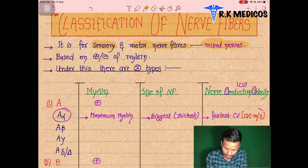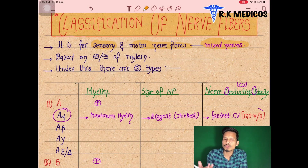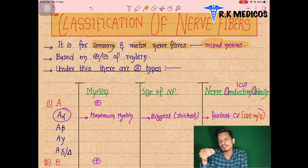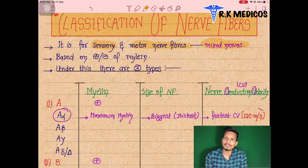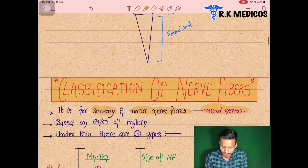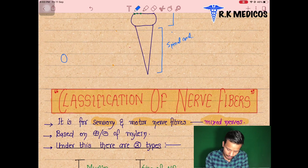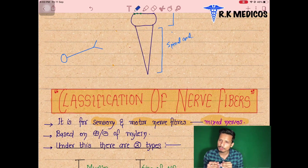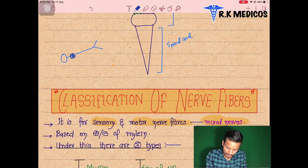We are going to discuss how nerve fibers are classified — basically how fast or how slow they are, meaning how much time it takes to reach the central nervous system. This depends on something called myelination. Myelination is basically the covering over the neurons. Suppose this is one neuron — we cover this neuron with several components in several segments, and these segments are basically called myelin.